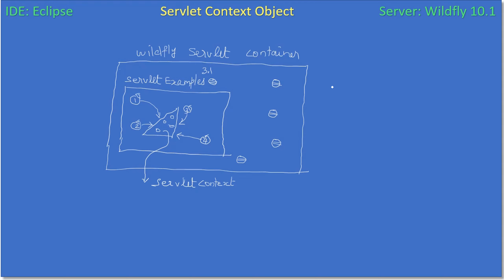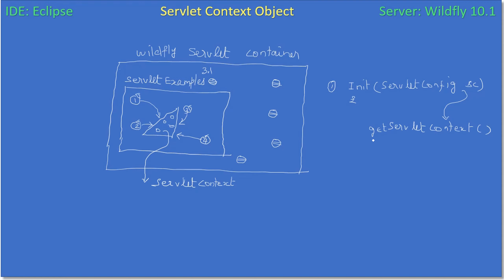Now we will see how to get the servlet context object. There are two ways. One, you can get it from the servlet init method. When you override init you will get a ServletConfig — do not confuse ServletConfig with servlet context, both are different objects. From this ServletConfig you can actually get the servlet context using the getServletContext method.